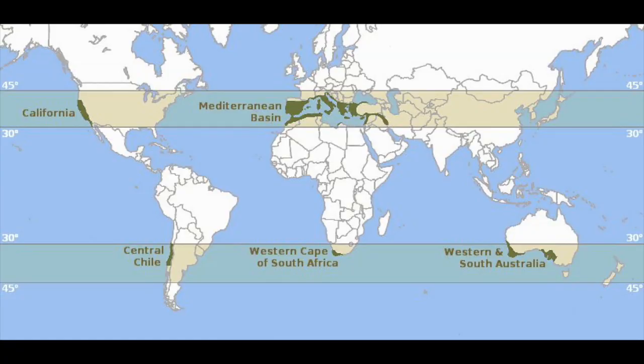There are other places in the world with Mediterranean climates: northern California, Chile, New Zealand, and parts of Australia. These areas have also become very well known for their wines, so you can definitely see the connection.